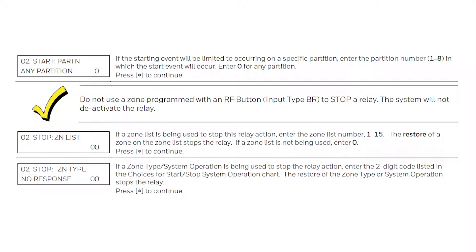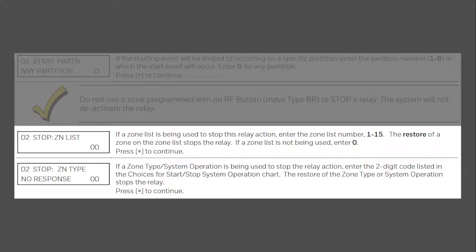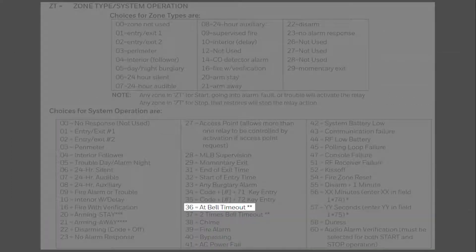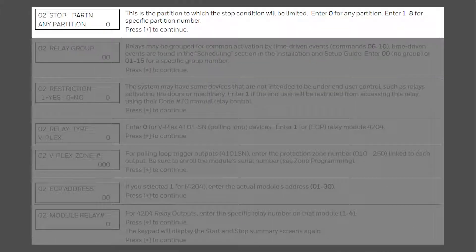If the relay was programmed to start on a zone number and the condition is met while the panel is disarmed, the relay will restore when the zone is restored. If the panel is armed when the condition is met, then the relay will not change state until a code and off is entered. If you activated the relay with a zone list or zone type, choose the corresponding action to change the relay back to its original state. It can be on the restore of a zone within a specific zone list, or a zone type such as zone type 36, which is bell timeout or code and off, whichever happens first. Press star. Enter the partition that this stop action needs to originate from, then press star.